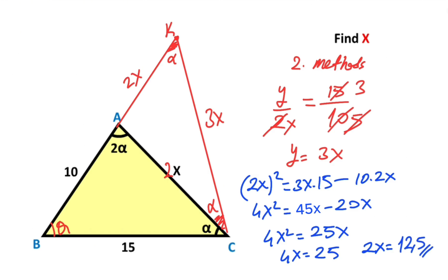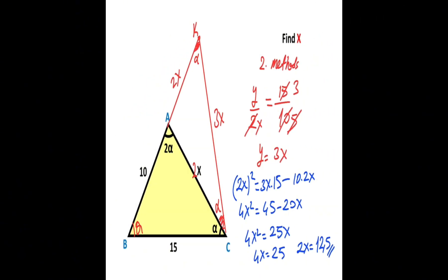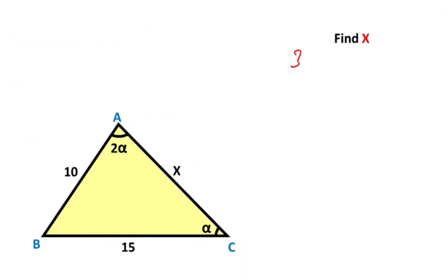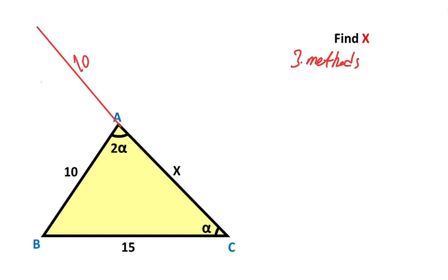Now we will calculate the value of X using the third method. This time, if we extend corner A by 10 units and connect these two corners, let's call here point T.